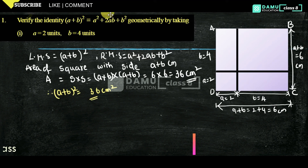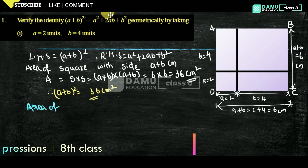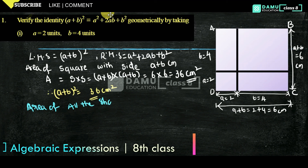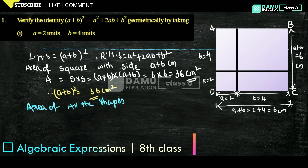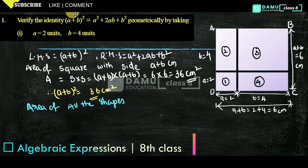Now for the right-hand side, which is the area of all the shapes, let us number them 1, 2, 3, 4. The dimensions are: shape 1 is 2 by 2, shape 2 is 2 by 4, shape 3 is 2 by 2, shape 4 is 2 by 4, and the remaining piece is 4 by 4.